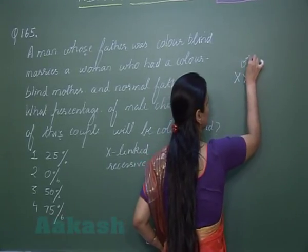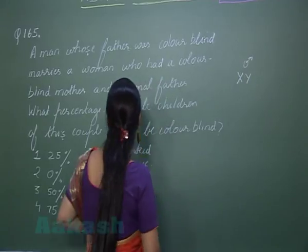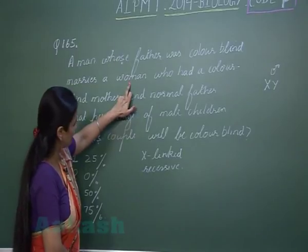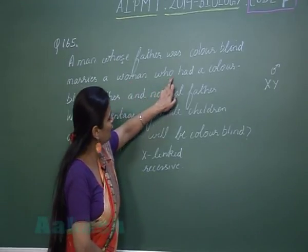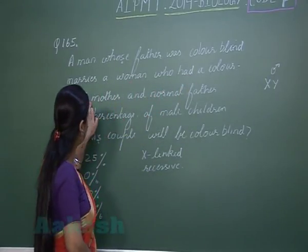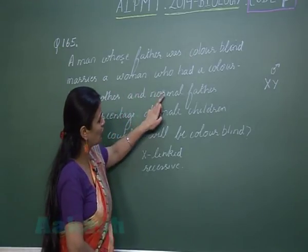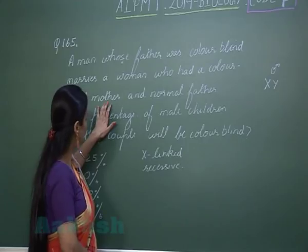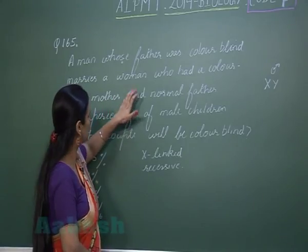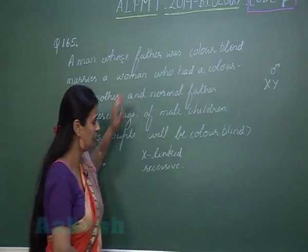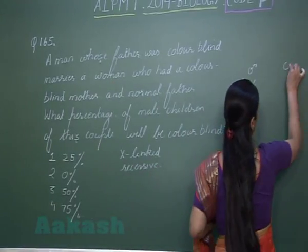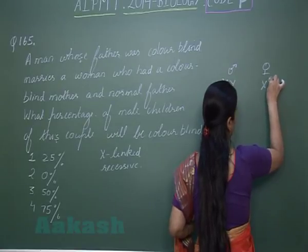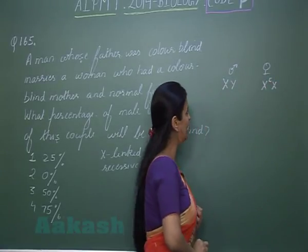Now let's see the condition for the female. The man marries a woman who had a colorblind mother and a normal father. So the allele has been transferred to the female from her parents. We can say the female is a carrier for the disease, and this is how we can show her genotype.